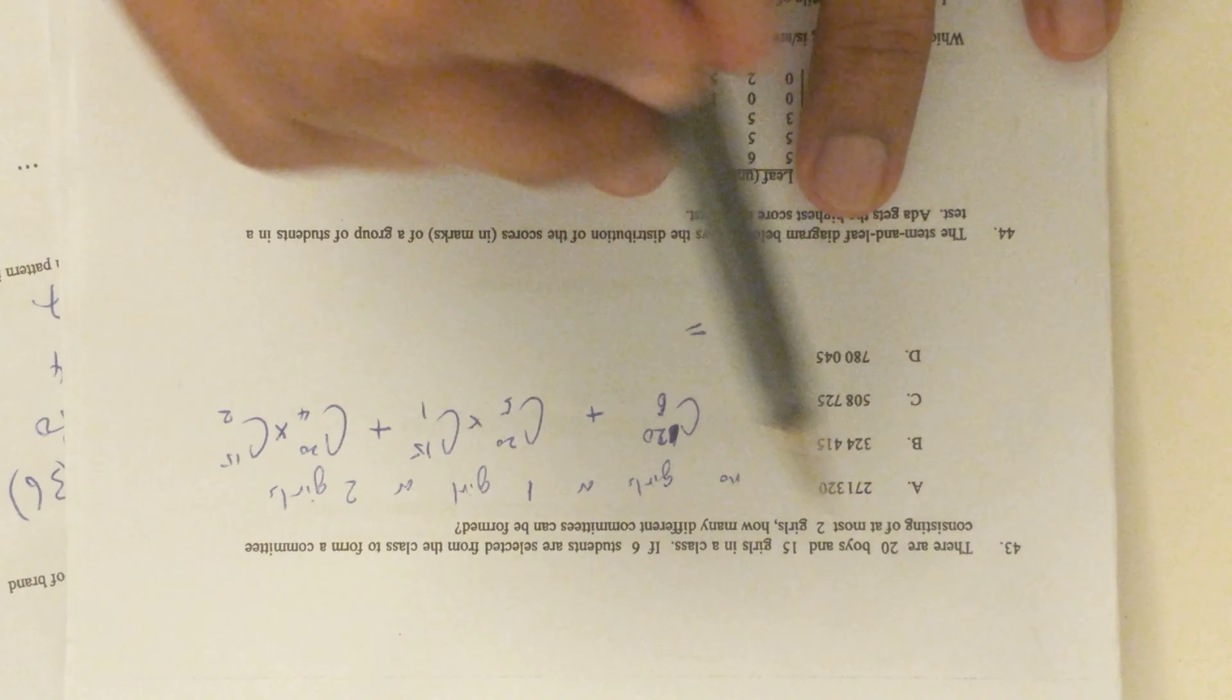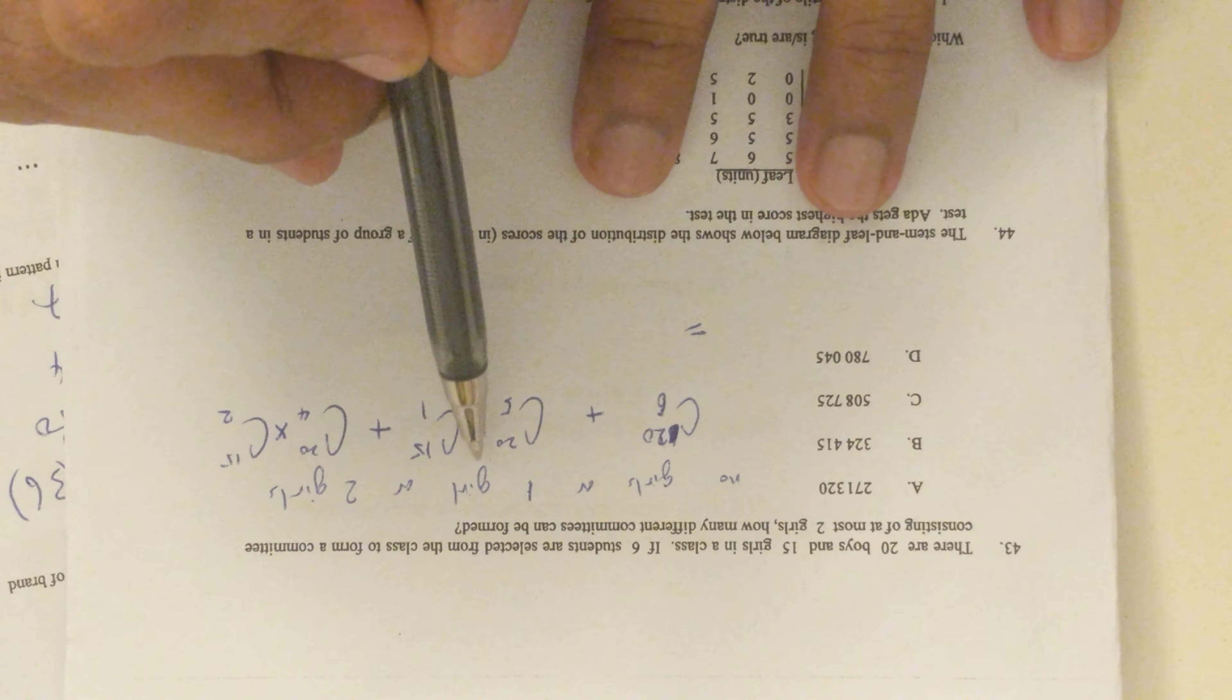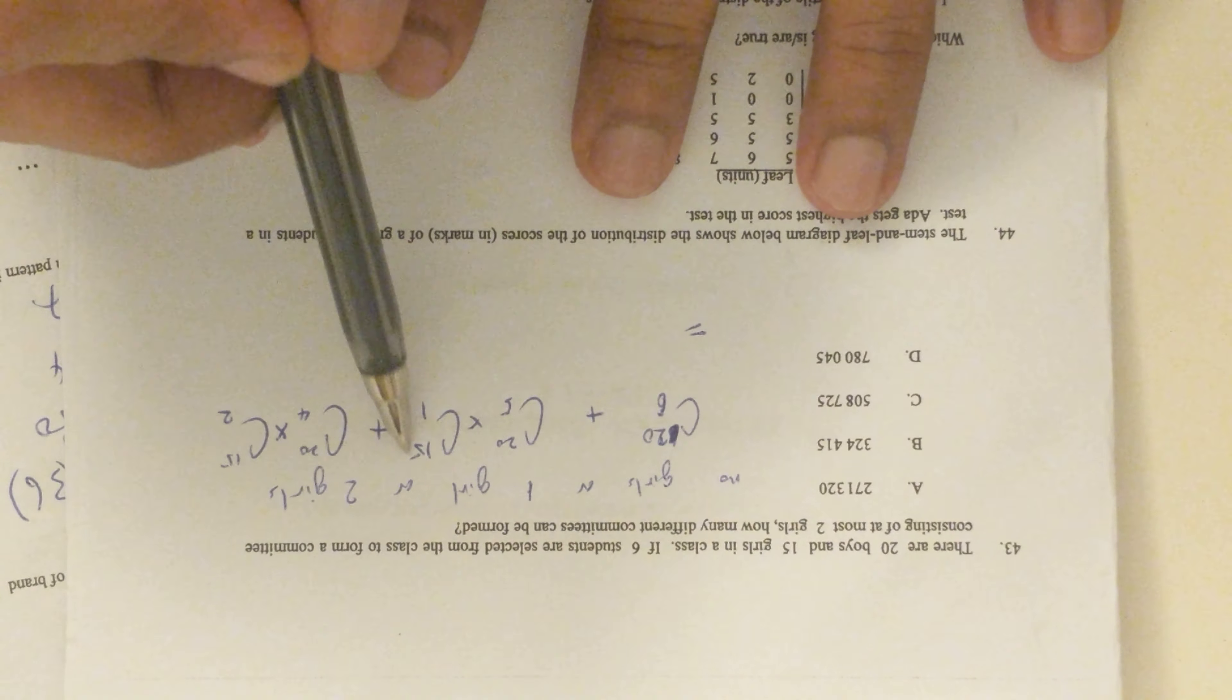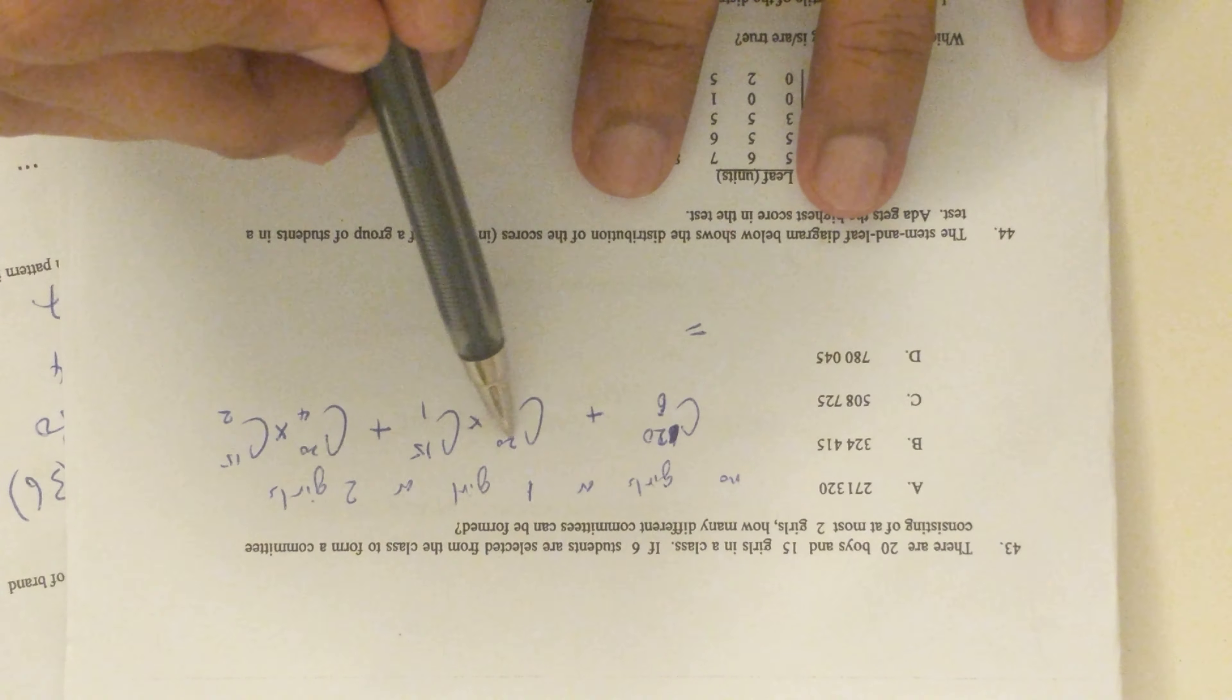Or if I'm choosing one girl out of the 15, the remaining five students will be the boys, so 20C5. Or two girls - if I'm choosing two girls out of 15, then I need four more people from the boys.